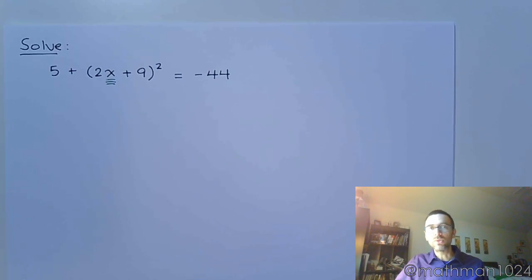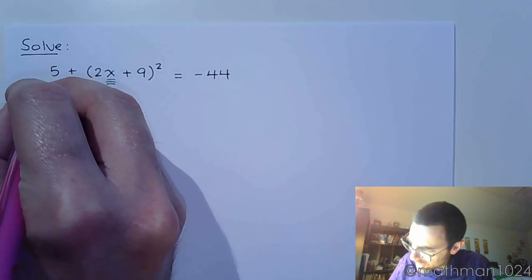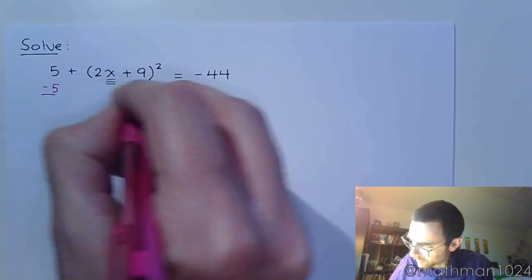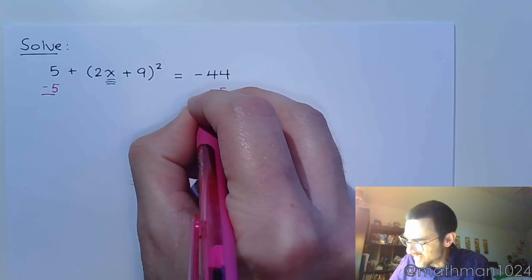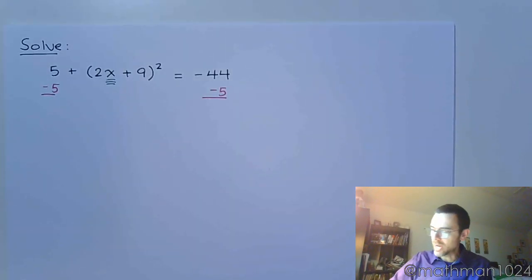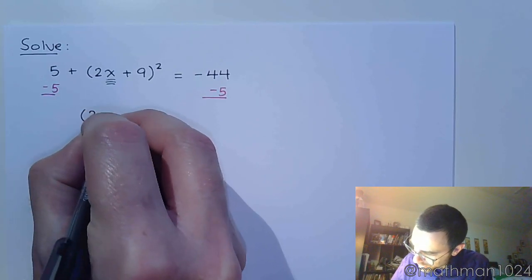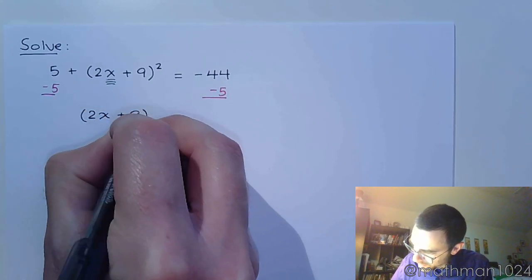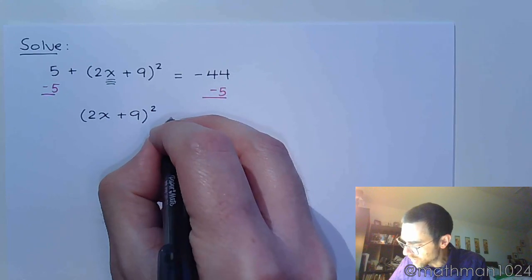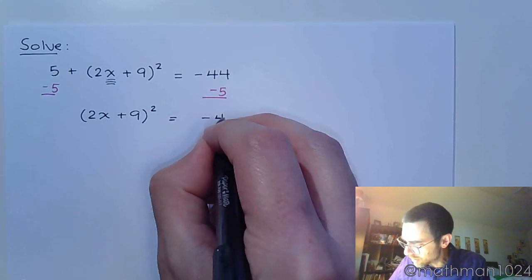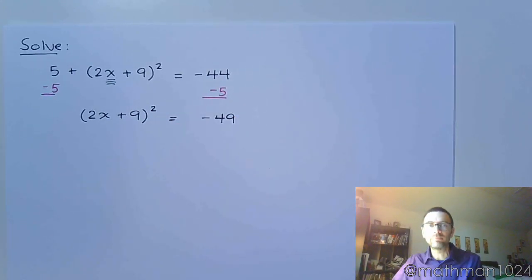So you have to start peeling away the layers until only x remains. Well, the first big guy to get rid of is this 5. See, the 5 isn't really connected to anything, so we're just going to subtract 5 on both sides, leaving us with (2x + 9)² = -49.